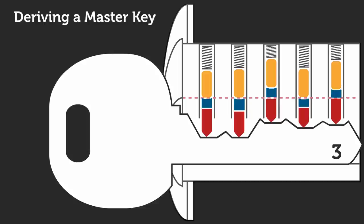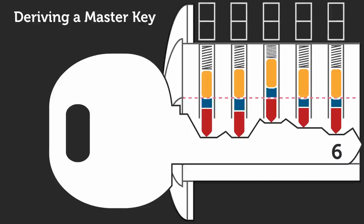Now we've found the bottom of the master wafer, and we'll continue cutting. On a number 4 cut, it will not work. On a number 5, no dice. But again, on a number 6 cut, the lock will turn for us. That tells us that in the 6th position of the lock, the bottom of the master wafer is a number 3 cut, and the top of the master wafer is a number 6 cut.